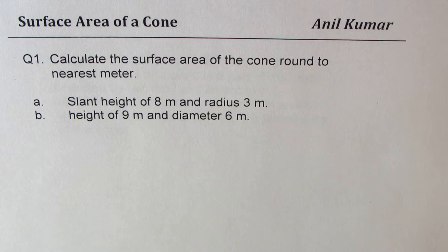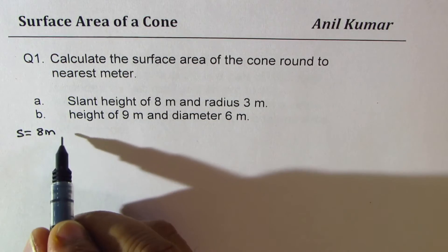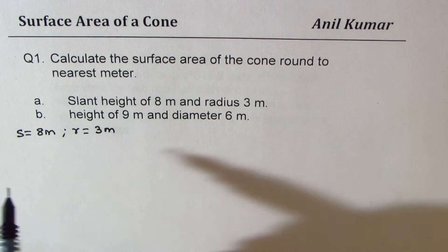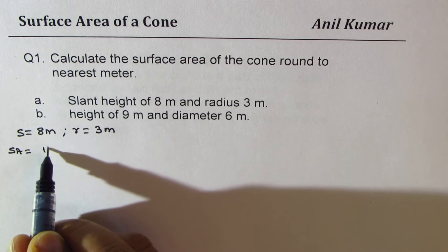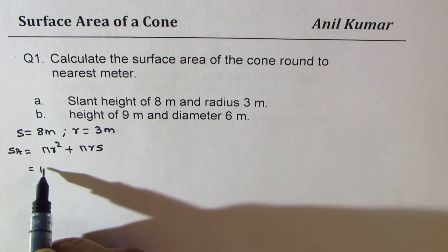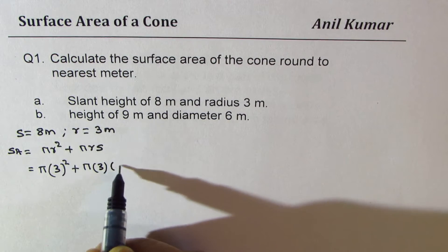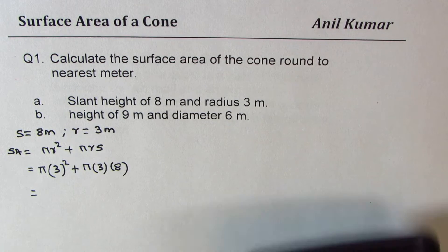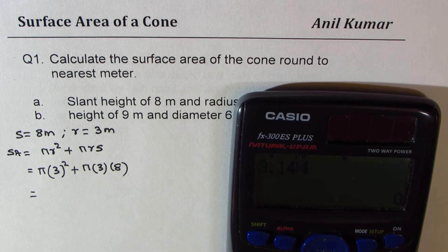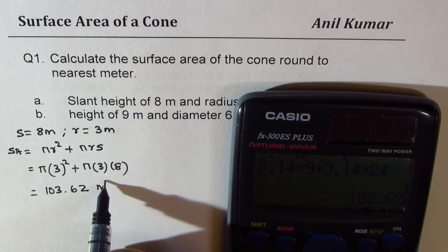Here is my solution. For question one, part one: the surface area is πr² plus πrs. Since all values are given, this is π times 3² plus π times 3 times 8. Using π = 3.14, that is 3.14 times 9 plus 3.14 times 24.